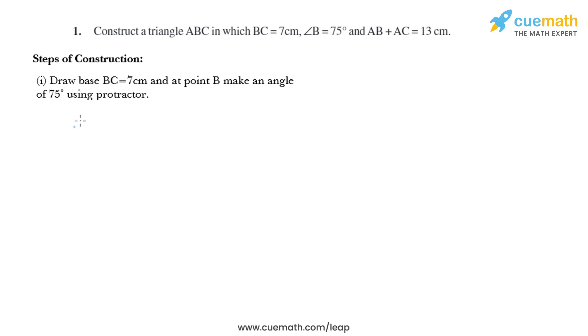So let's start with the steps of construction. Draw base BC equals 7 centimeter and at point B make an angle of 75 degrees using protractor.